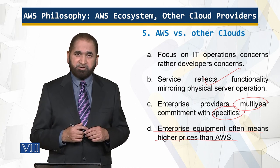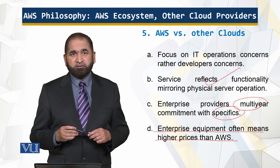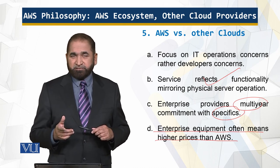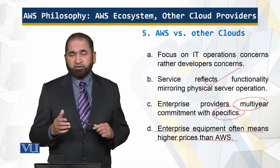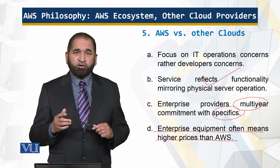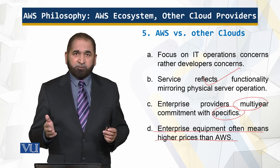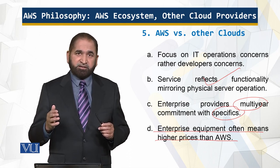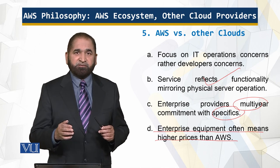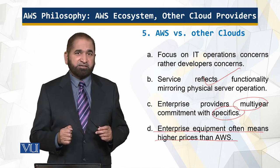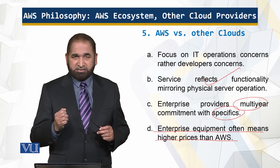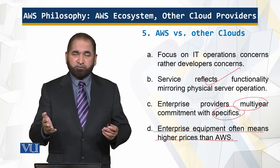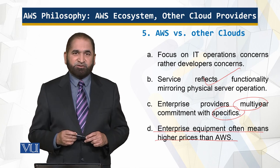Private cloud uses enterprise branded hardware, which is much more expensive compared to commodity hardware. Amazon's infrastructure is based on commodity hardware, which provides horizontal scaling at low cost. Even when branded hardware is used, Amazon's negotiators purchase it at low cost, and those savings are passed on to the public cloud user.